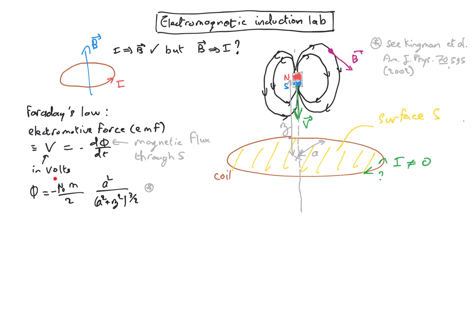If you want to know how we get this expression for the magnetic flux, have a look at Kingman et al. in this reference. This minus sign here, which is not in Kingman et al., is because of my choice to put the north side of the magnet up and for the magnet going down towards the coil. We also have defined the radius of the coil to be a and the height of the magnet with respect to the center of the coil to be z.